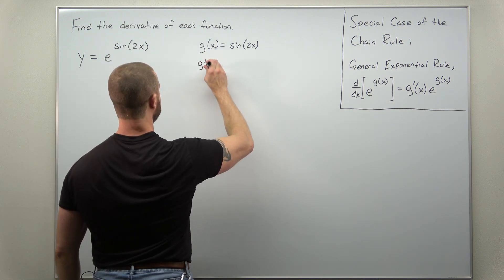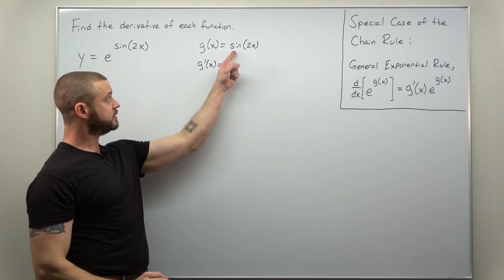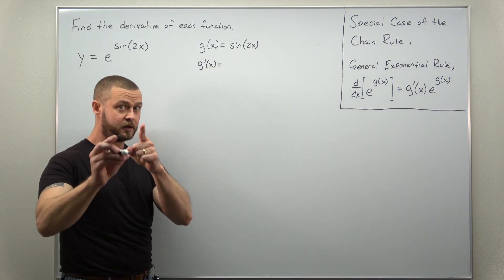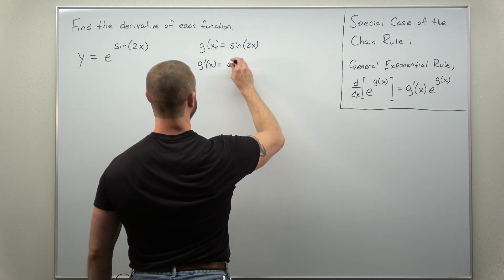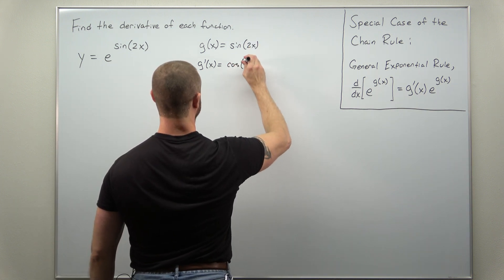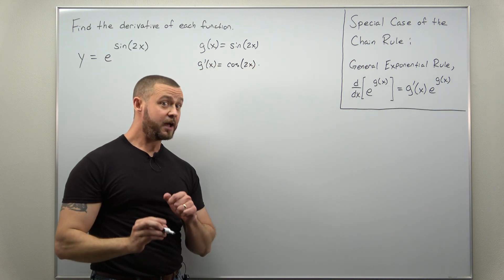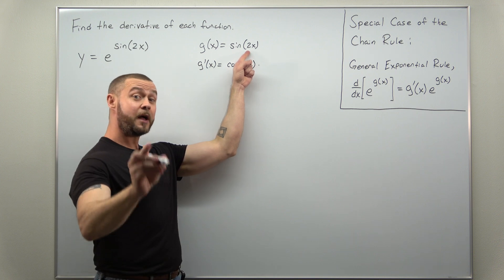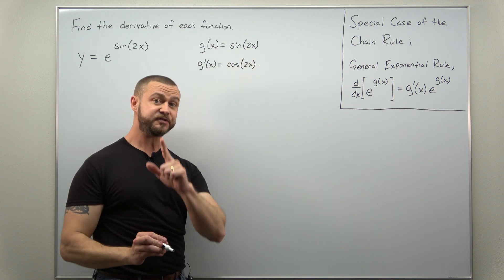So to calculate g prime, we're going to apply the chain rule. We're going to differentiate the outer function. The derivative of sine is cosine, so we get cosine of our inner function 2x. And now because we're applying the chain rule, we multiply by the derivative of the inner function. The derivative of 2x is just 2.